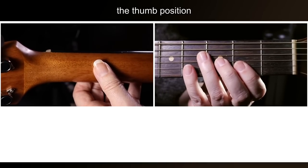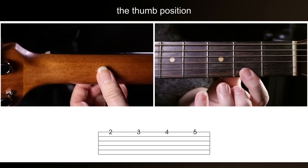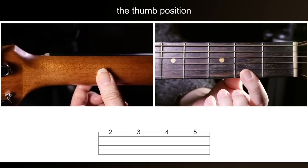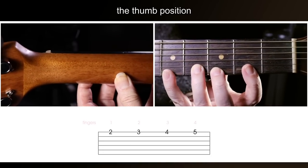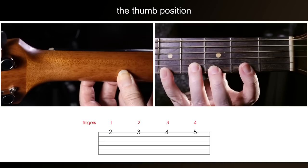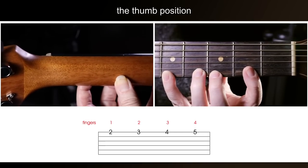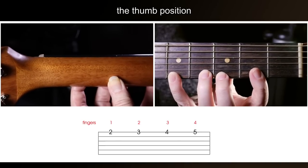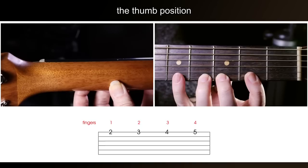And the first thing I'll play is literally just one note at a time from the second fret. So I'm playing fret 2, 3, 4 and 5 with the first, second, third and fourth finger. And I'm playing this on the top E string. And as I play the notes I'm leaving the fingers in place.